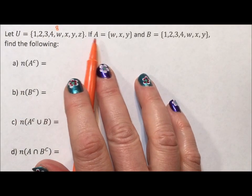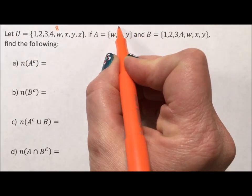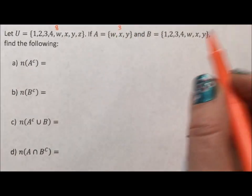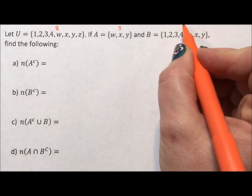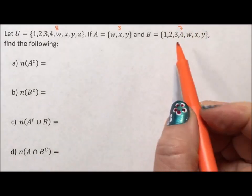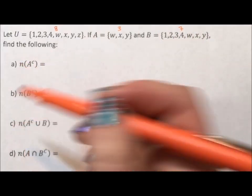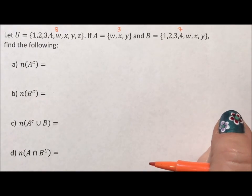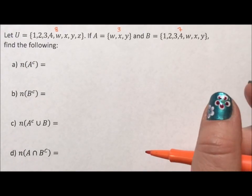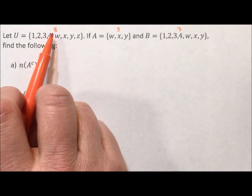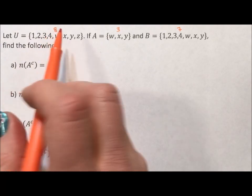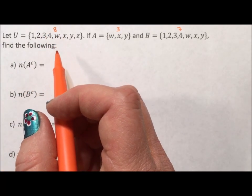Then we have set A, which has the elements W, X, Y, which is these three elements, and B, which is 1, 2, 3, 4, W, X, Y. That's seven elements. The reason I'm numbering these is because each of my questions asks for the number of elements, so it's good to keep track. So we're only dealing with eight elements. That's it. That's our full universe that we're dealing with today.